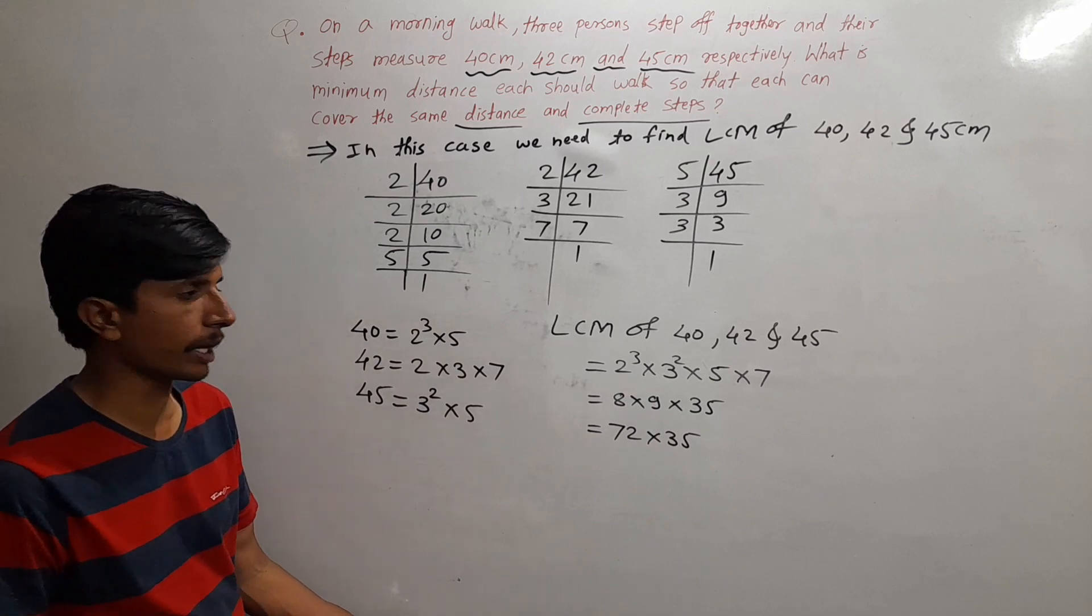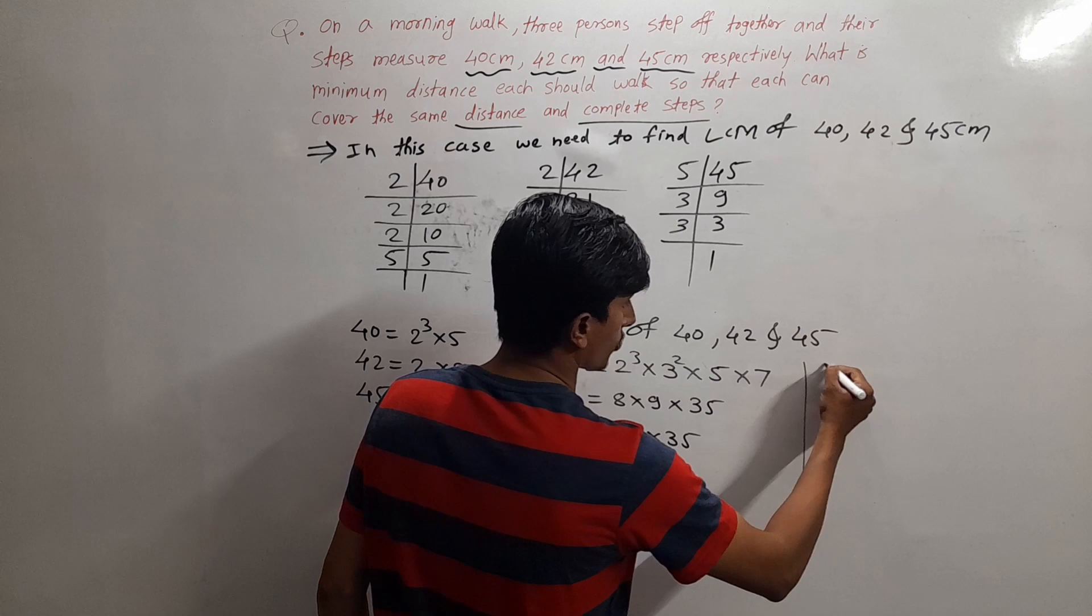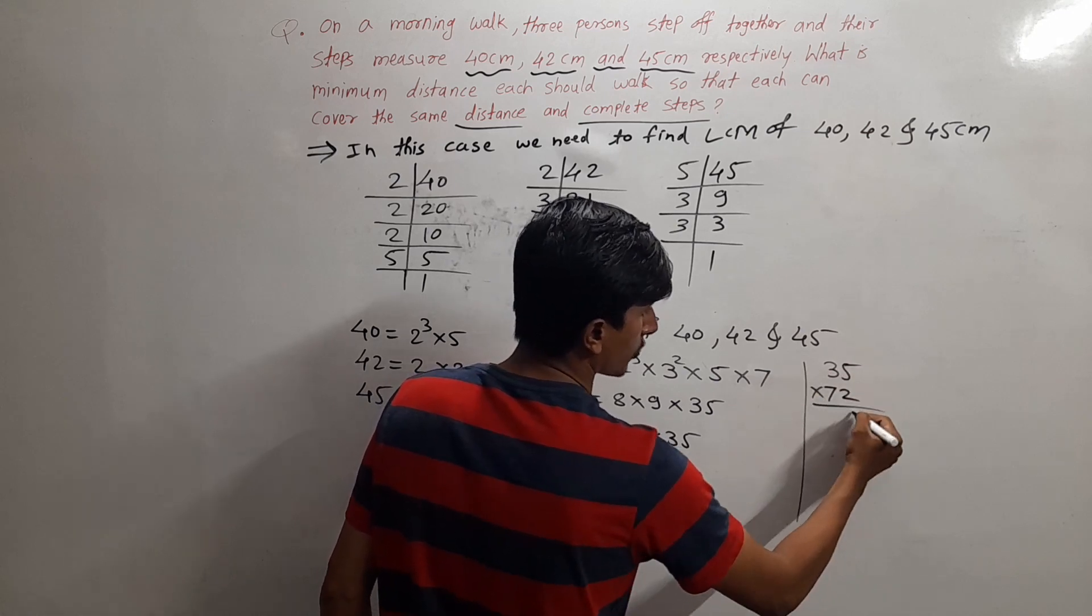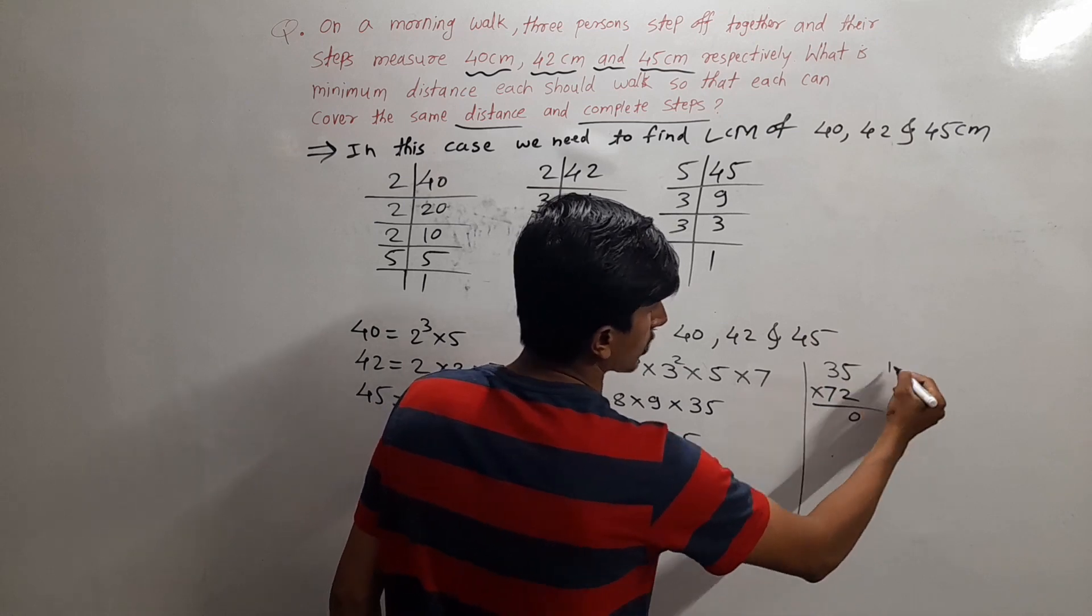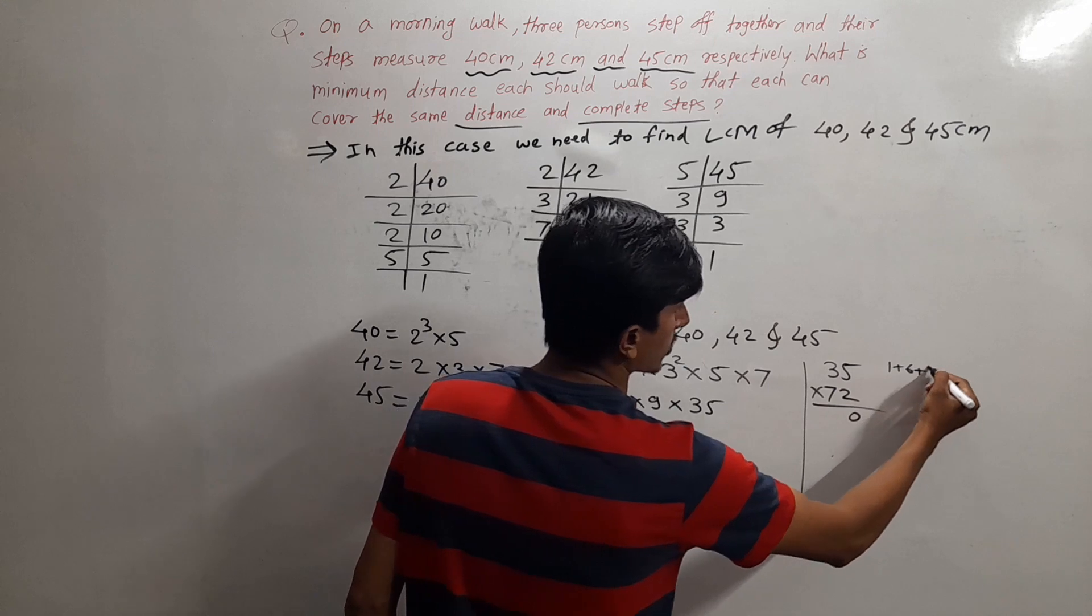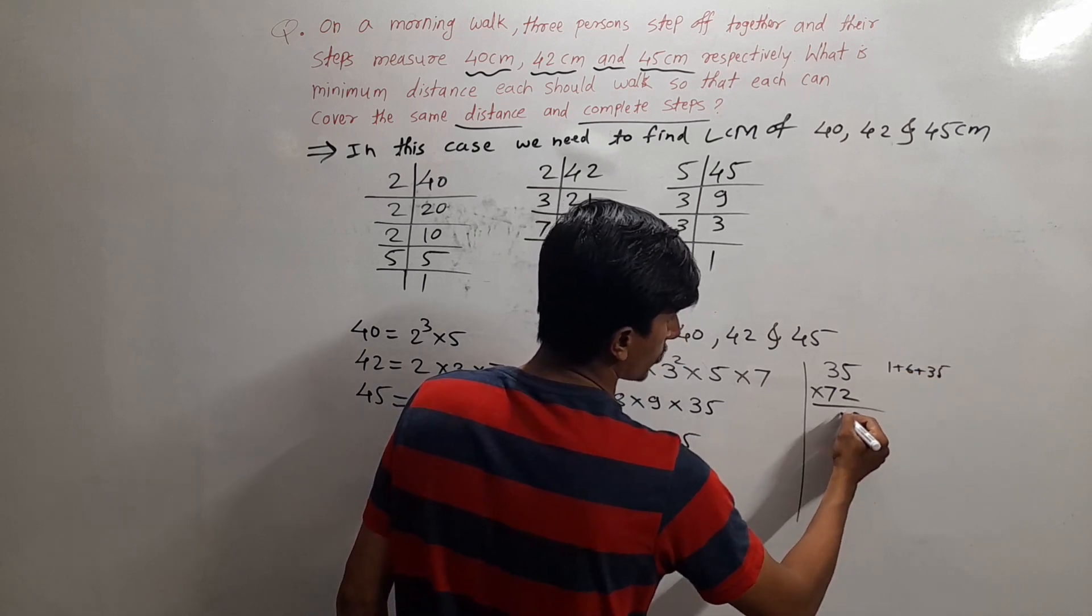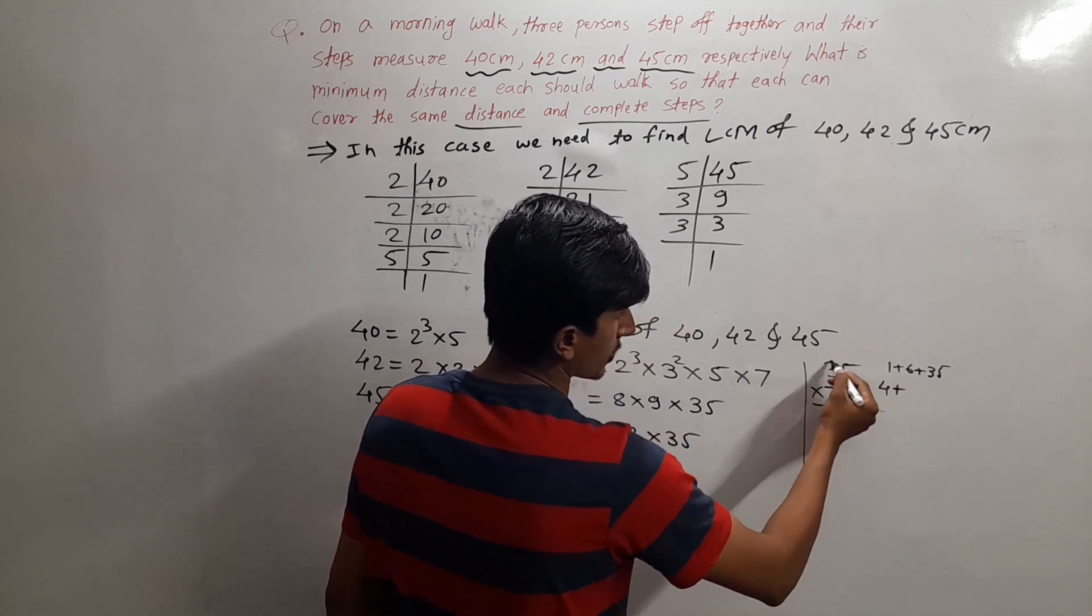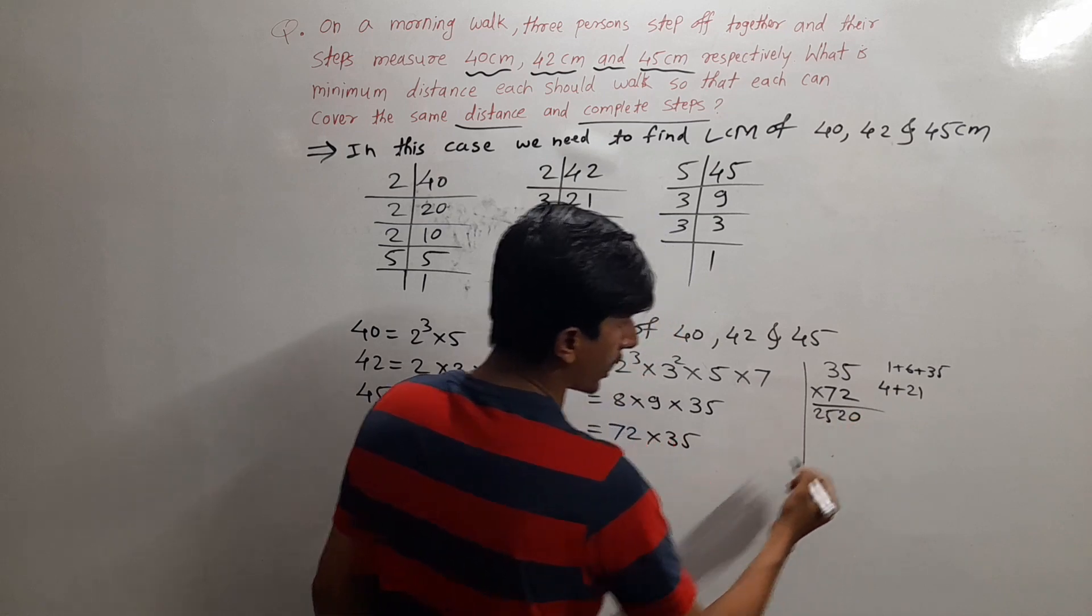For direct multiplication, use the cross multiplication method: 35 × 72. 5 × 2 = 10, write 0 carry 1. Then 3 × 2 plus 5 × 7 = 6 plus 35 = 41, plus carry 1 = 42, write 2 carry 4. Then 3 × 7 = 21, plus carry 4 = 25. So the result is 2520.